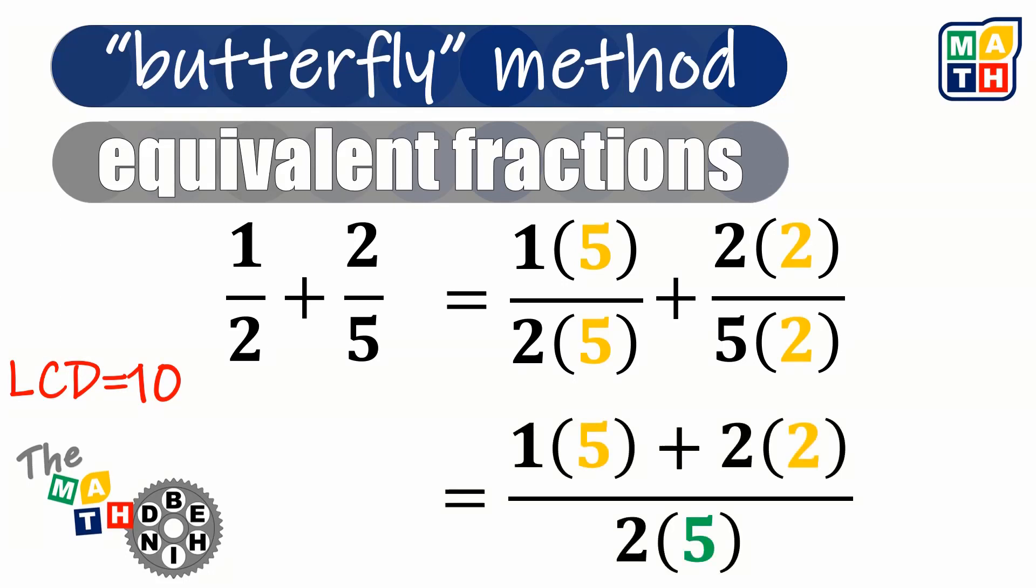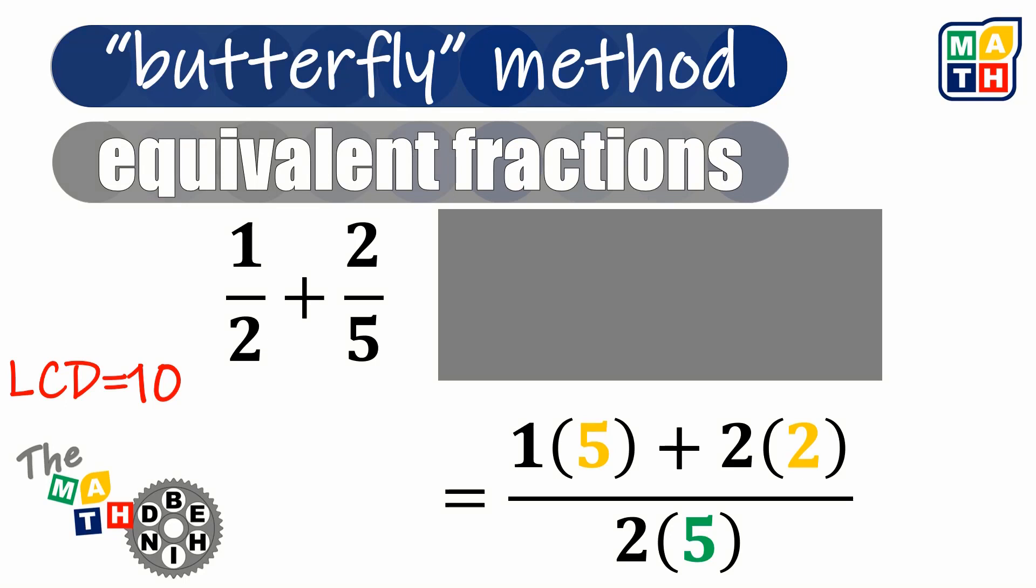This expression now acknowledges that we have similar fractions of denominator 10. If we are to cover the second step, we could see that the first term of the numerator is just a product of 1 and 5. The second is also a product of 2 and 2. Here, it looks like we are just cross-multiplying the terms that could be found in both fractions, separated by the same operation. And as for the denominator, it looks like we are just multiplying 2 and 5, which are the denominators of the given fractions.